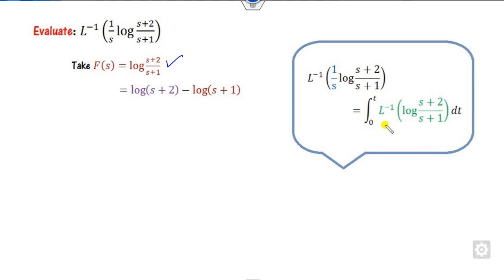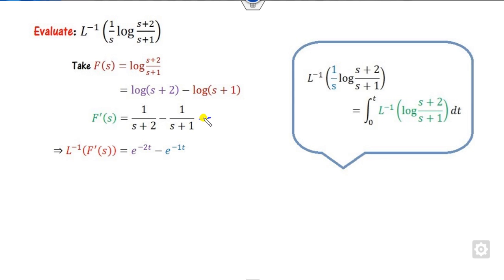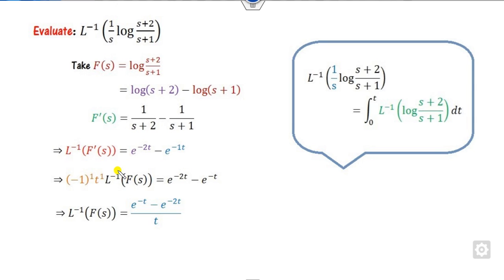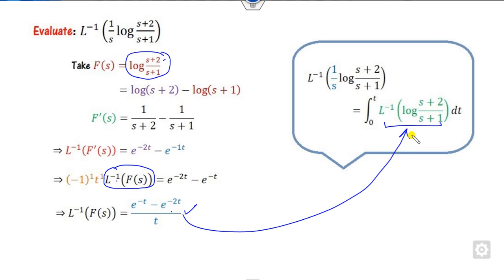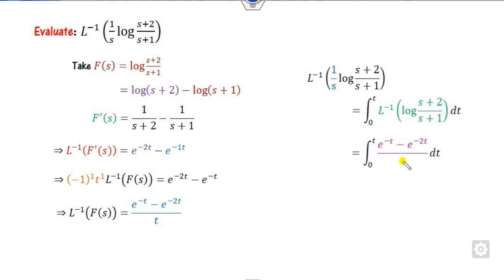So f(s) is this log again. Now take the derivative with respect to s - we will get this expression. Take the Laplace inverse on both sides. This Laplace inverse is here. Now again this is derivative 1, so I can write this as t raised to minus 1. This is L⁻¹{f(s)}. From here you can easily find the value of the Laplace inverse of f(s). Now substitute this value here and you will get the required. Since analytical integration is not possible, you can skip it as shown here.